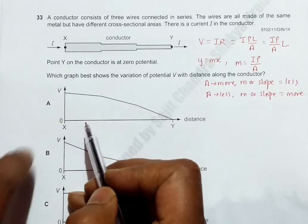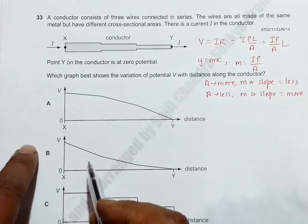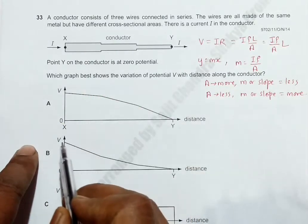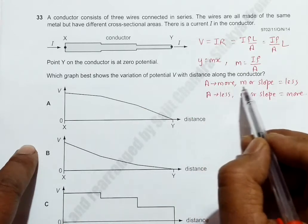In choice number B, we have cross-section high, slope also high, which does not match with this statement. So this is the wrong choice.